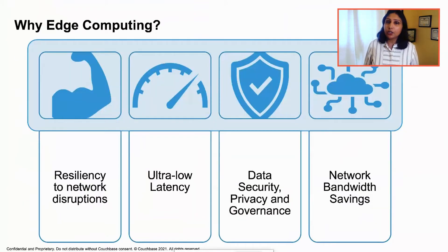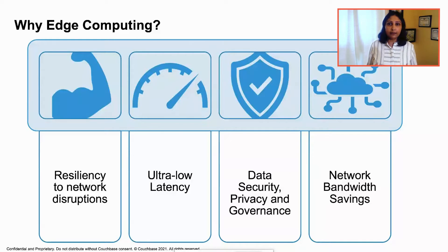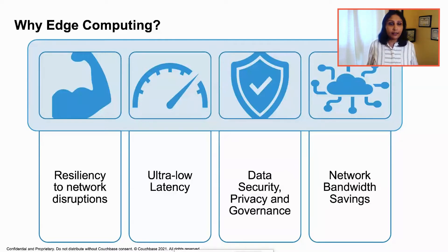So what is the value proposition of edge computing? First, it's resiliency to network disruptions — guaranteed access to data regardless of network conditions — which impacts business continuity. Then you need guaranteed real-time access to data regardless of network bandwidth or latency, because if data is traversing the network, you are bound by the speed of light and the laws of physics. Then security: data governance, data privacy, and adherence to regulatory policies. And finally, bandwidth savings.